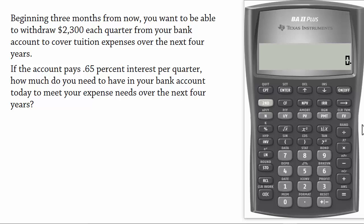Hello and welcome. In this video, we answer this question posted in the comment section of my Ordinary Annuity video. Beginning 3 months from now, you want to be able to withdraw $2,300 each quarter from your bank account to cover tuition expenses over the next 4 years.